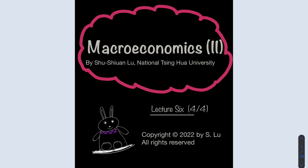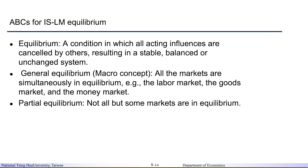After looking at the factors shifting the full employment line, IS curve, and LM curve, we want to combine all of them together and see if we can use all these frameworks or building blocks to conduct the Keynesian type of analysis. So what we want to do next is talk about the IS-LM equilibrium.